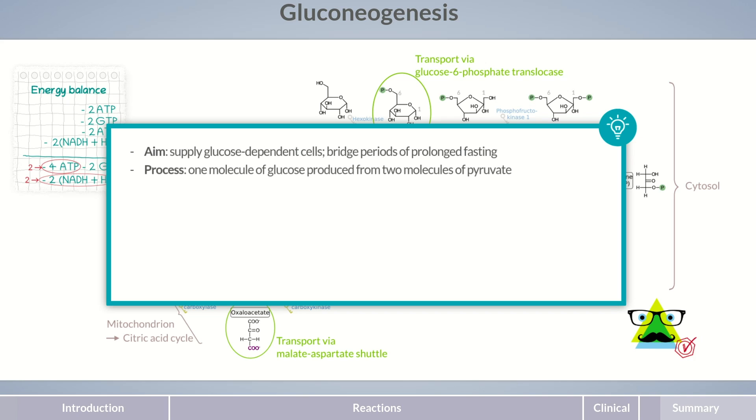In gluconeogenesis, one molecule of glucose is produced from two molecules of pyruvate in eleven reaction steps. The first step of gluconeogenesis occurs exclusively in the mitochondrion, the last step in the endoplasmic reticulum, and all others in the cytosol.